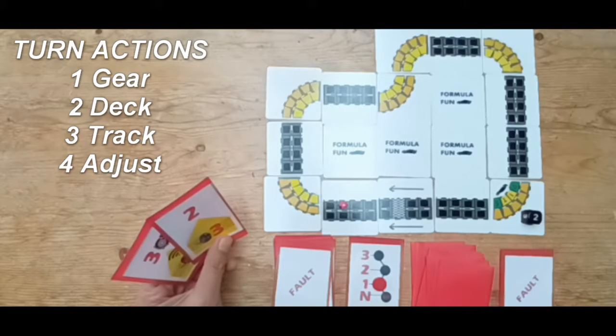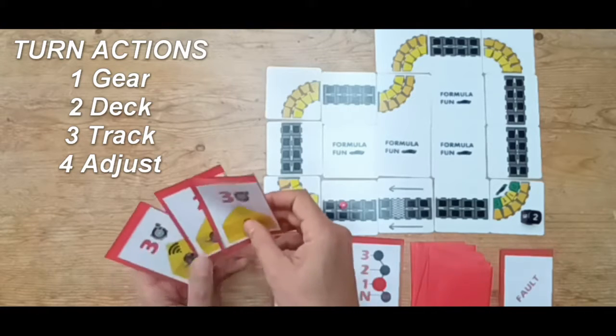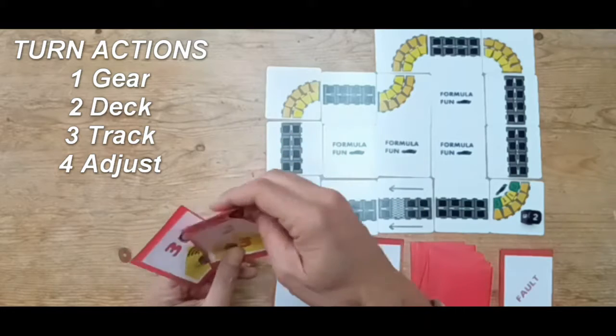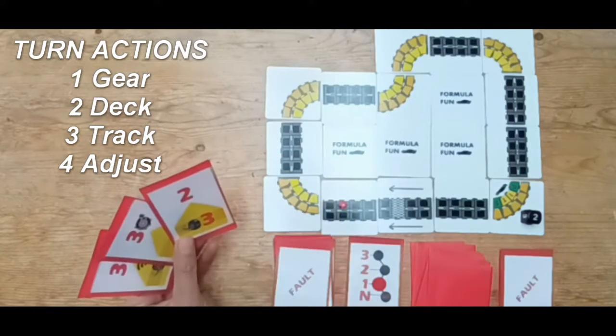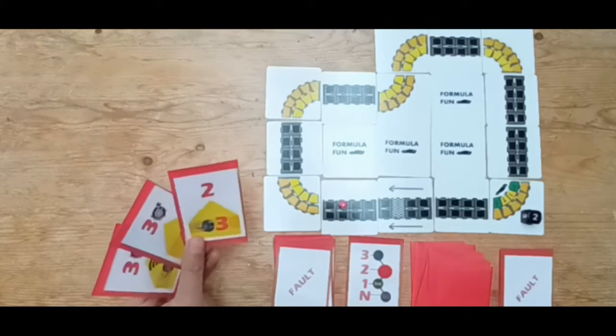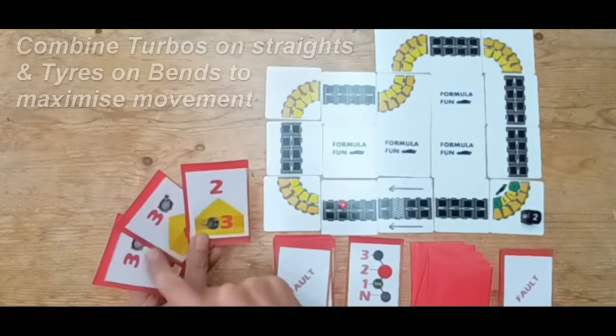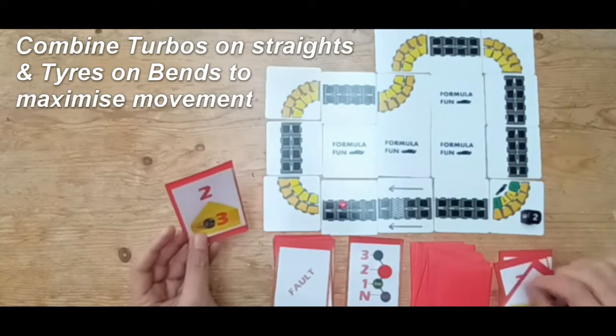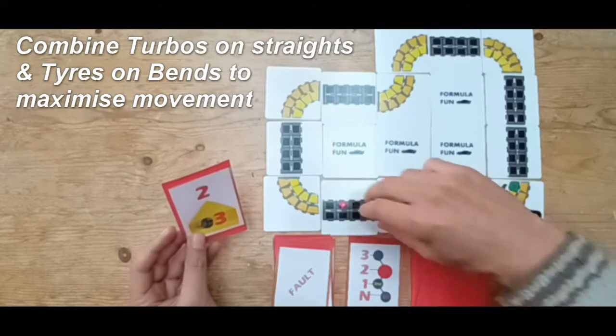Second go, we'll go for the same actions. Now I can combine these two cards. So with my gears I can go up to second gear, which means I could play two cards. I'm going to combine these two turbos on the straight to make six.